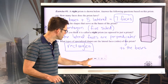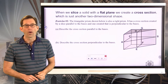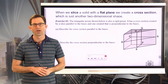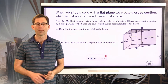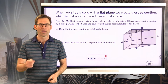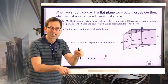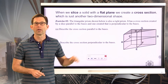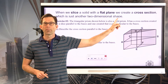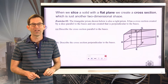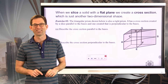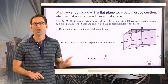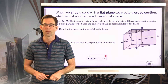Now, we often want to slice a three-dimensional solid. When we slice a solid with a flat plane — imagine using a bread knife to cut a slice and pull the solid apart — we create what's called a cross-section, which is just another two-dimensional shape. Let's take a look at exercise number two and a couple of cross-sections.